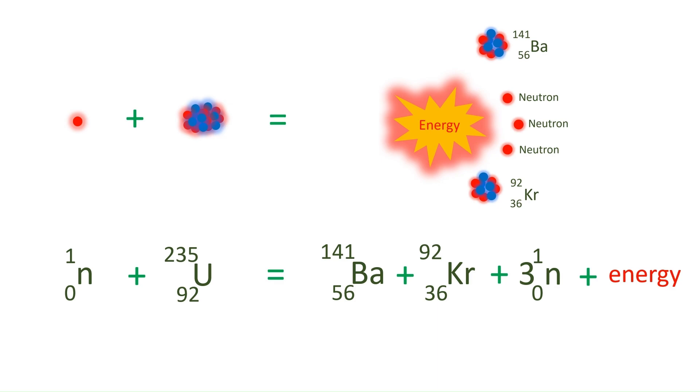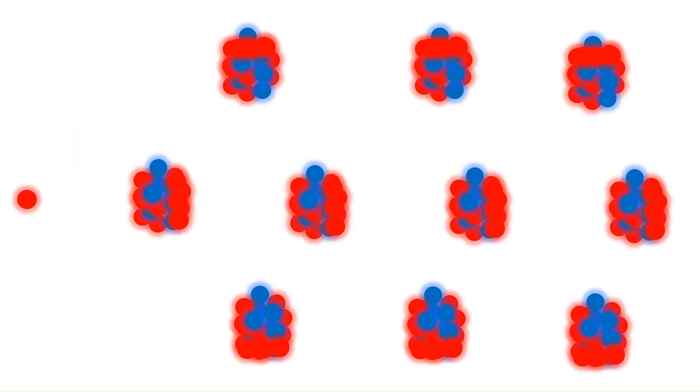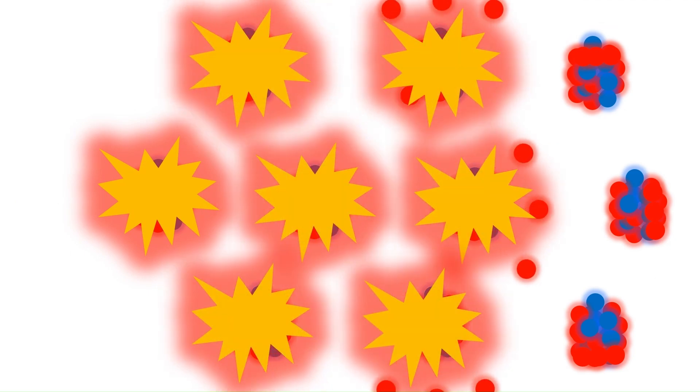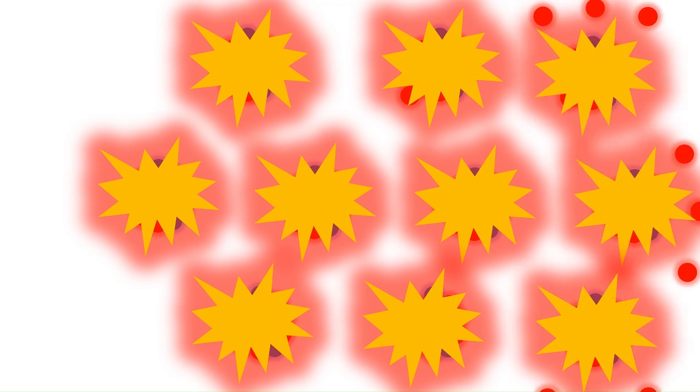The three neutrons released can collide with other uranium nuclei, causing them to split and release more neutrons in energy. This creates an exponential chain reaction.